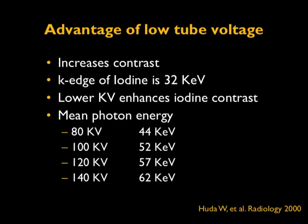One of the advantages of using low tube voltage is especially for studies utilizing iodine contrast — the image contrast increases with use of low tube voltage. Because the K-edge of iodine is about 32 kilo electron volts (keV), lower tube voltage enhances this iodine contrast. Given the different tube voltages and their respective average photon energies, going from 120 to 100 or 80 kV brings the photon beam energy closer to the K-edge of iodine, thereby enhancing iodine contrast in the image.